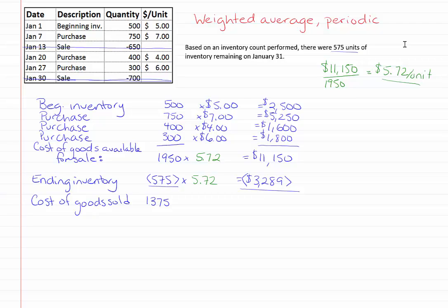Our cost of goods sold based on that is 1,375 units for a total cost of $7,861.